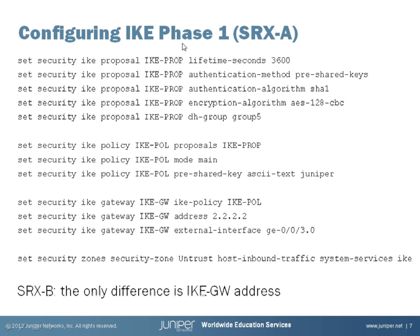Configuring IKE Phase 1 requires several steps. The first step is configuring an IKE proposal, which is a set of algorithms and parameters for the tunnel — we choose authentication and encryption algorithms, Diffie-Hellman group, and lifetime, as well as the authentication method. Then we configure an IKE policy, which references the proposals we configured, and we choose the IKE mode — main or aggressive, which is main in our case — and enter the pre-shared key.